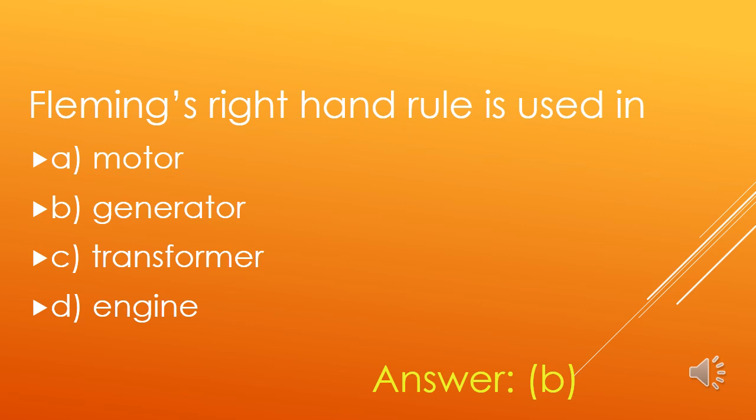Fleming's right-hand rule is used in: A. Motor, B. Generator, C. Transformer, D. Engine. Fleming's right-hand rule is applied in a generator. So, option B is the right answer.